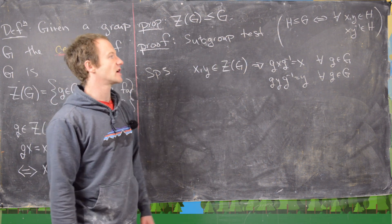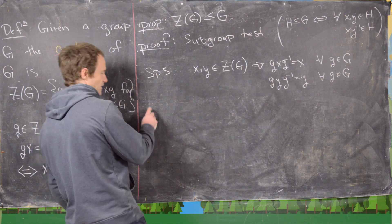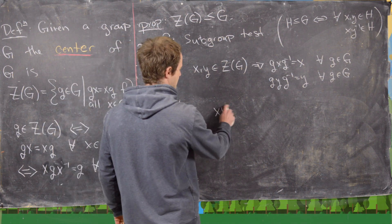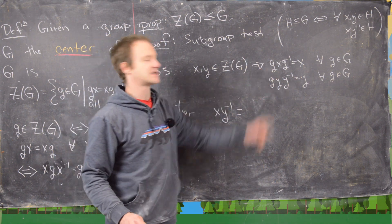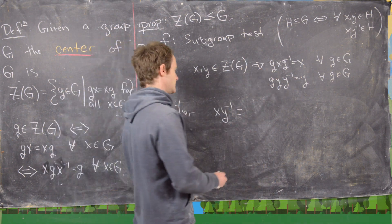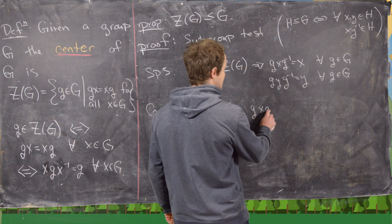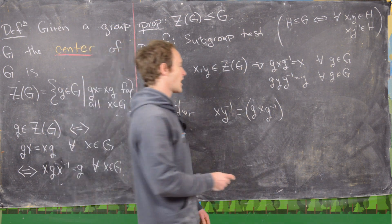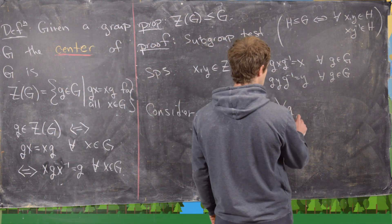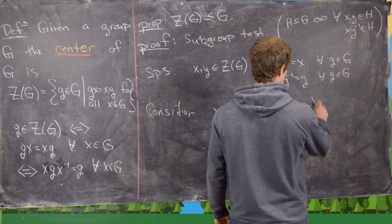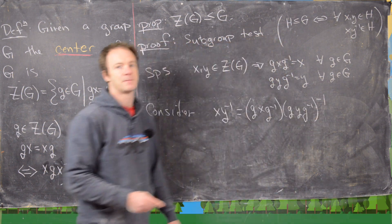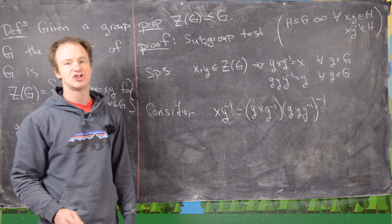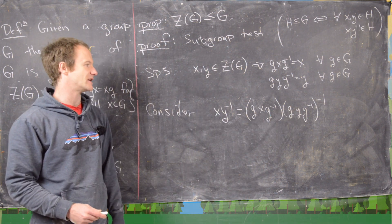The next thing we want to do is consider xy inverse. Notice that we can write x using the conjugation expression, so we can write this as gxg inverse — that's the same thing as x. And we can write y as gyg inverse and then take the inverse of that. So we've just replaced x with gxg inverse and y with gyg inverse, where g is an arbitrary element of the group.